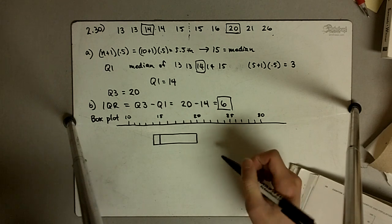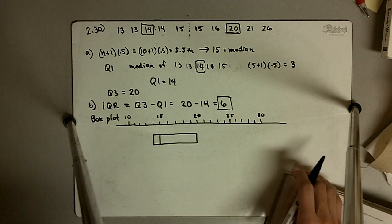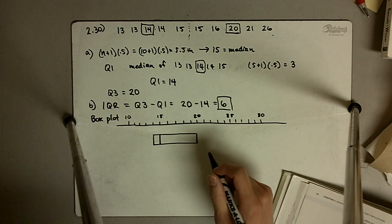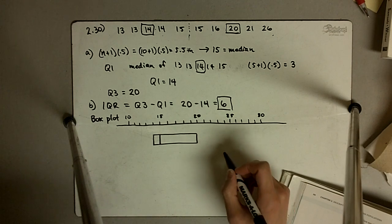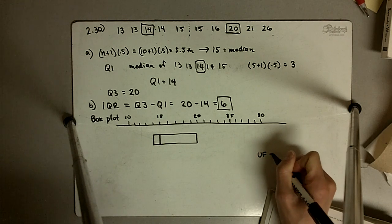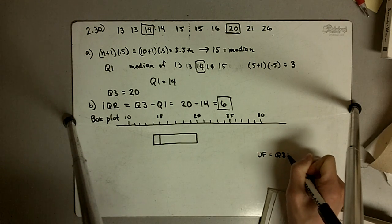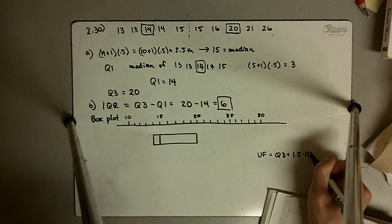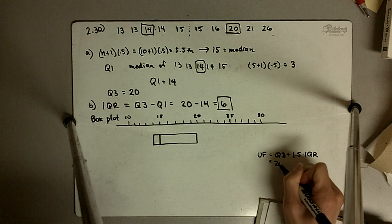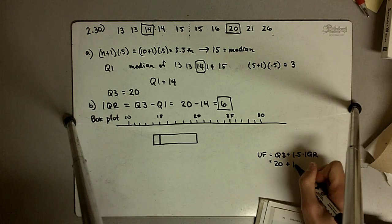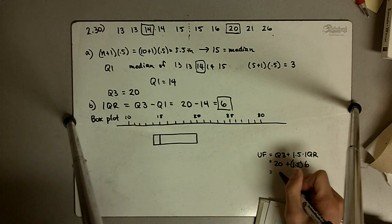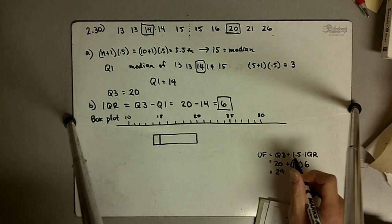To find our upper and lower fences, the upper fence is Q3 plus 1½ times the IQR. So in this case, Q3 is 20 and our IQR is 6. So 1½ times 6 is 9, making our upper fence 29.